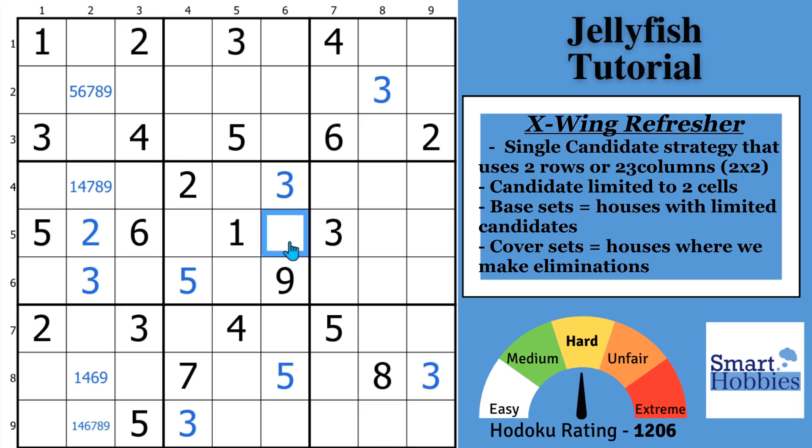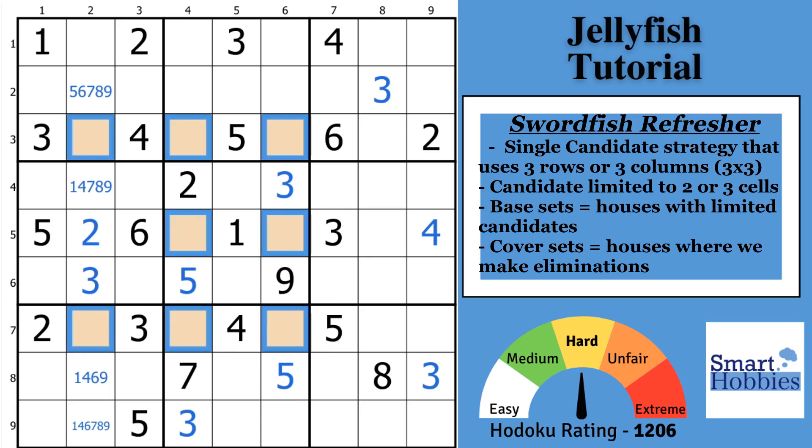And let's move on to a swordfish. Now, a swordfish is also known as a 3 by 3. If you had a 4, let's say you put a 4 in this row, in this cell, where could the 8s be in rows 3, 5, and 7? You may notice they can now be in these three spots in row 3, these two spots in row 5, and in these three spots in row 7. This is a swordfish.